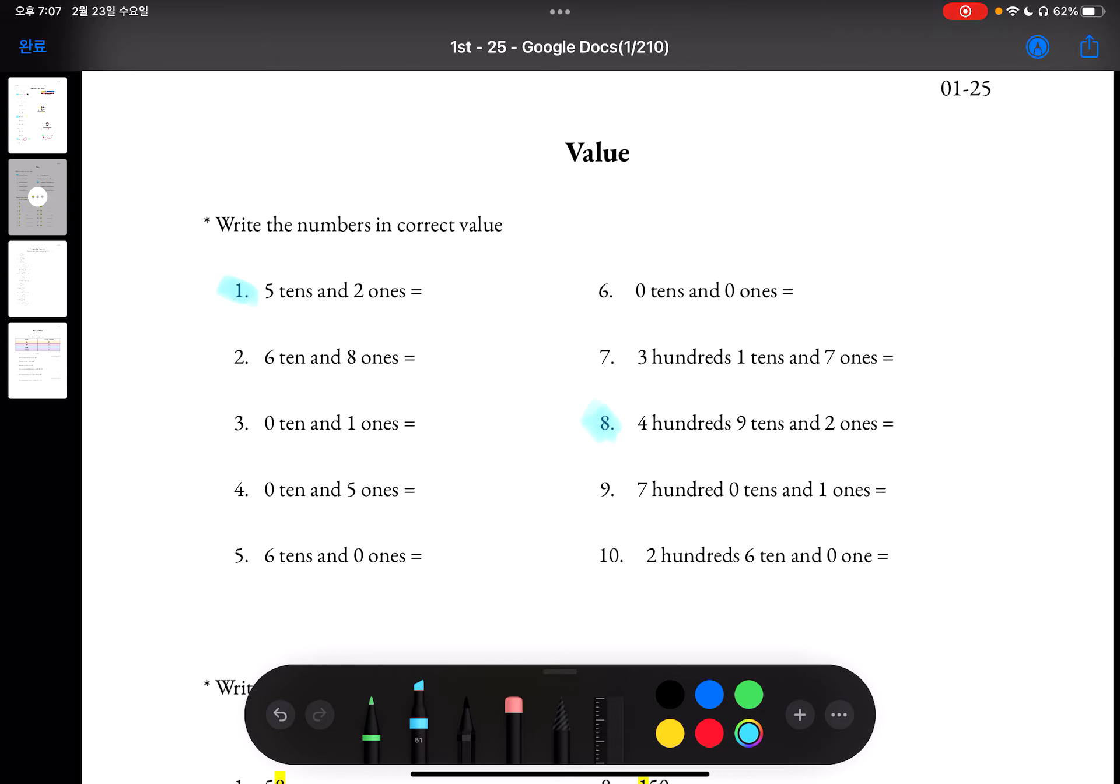Number 1 says 5 tens and 2 ones. And you basically have to write as what it says. So there are 5 tens, so 50. And 2 ones, which is 2. So we just add 50 and 2 and get 52.